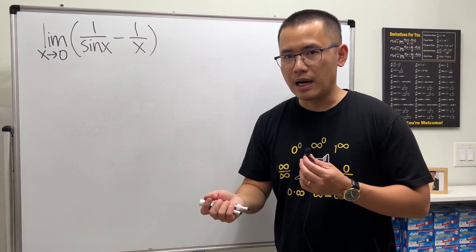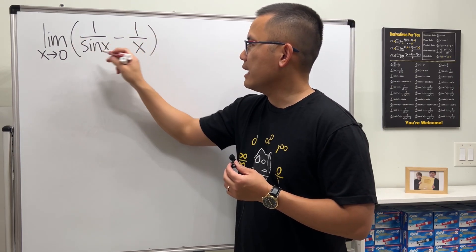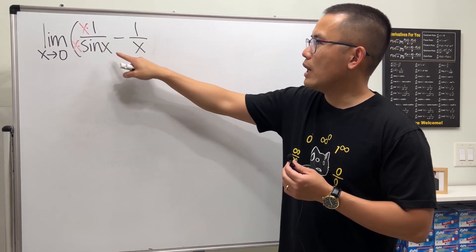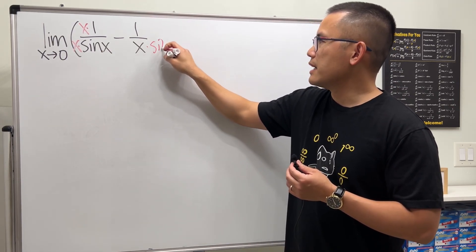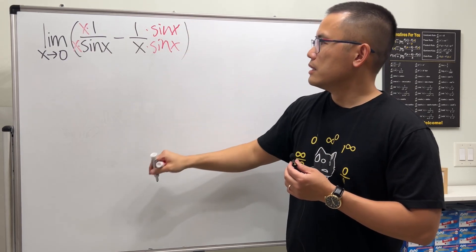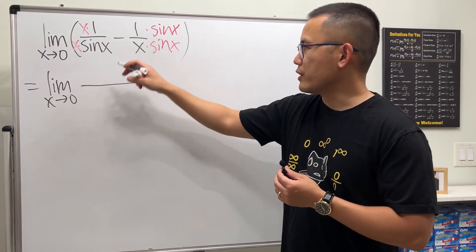This is what we can do. First let's combine them. In order to do so we will need a common denominator. For the first one I will have to multiply by x here, and for the second one I will have to multiply by sin(x) here. So they will have the same denominator and we can just write that down one time.